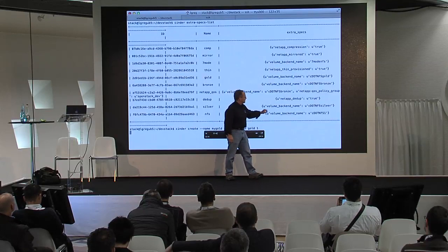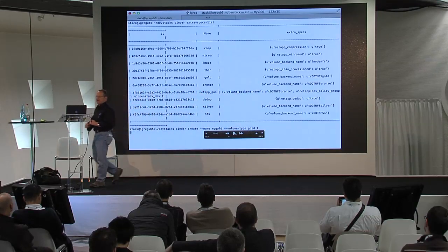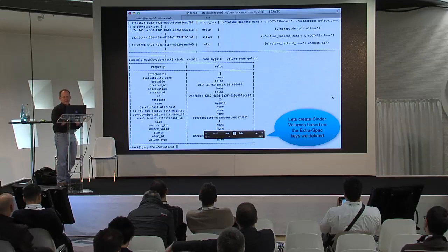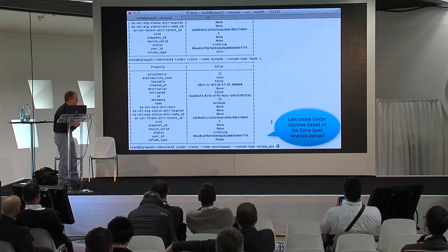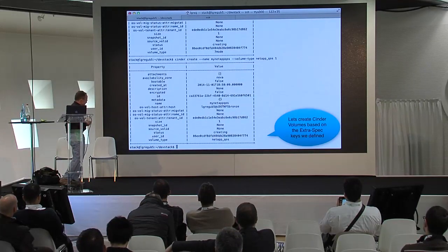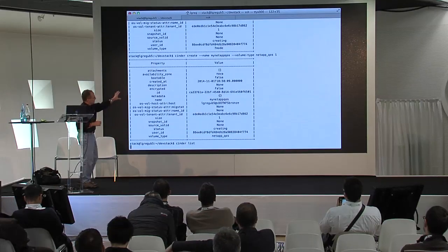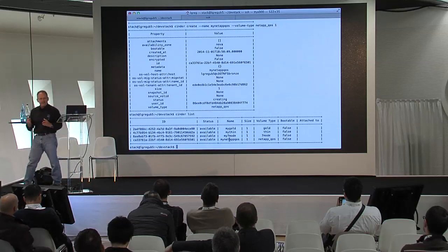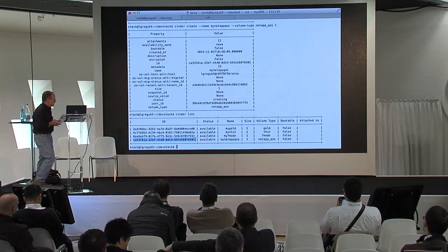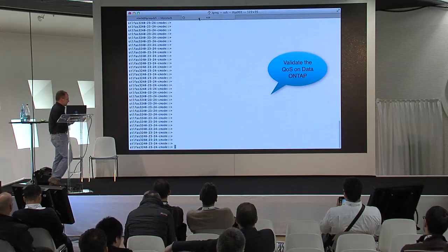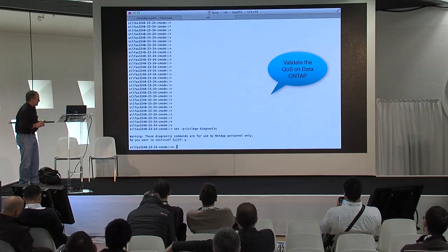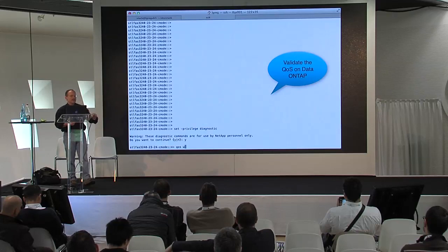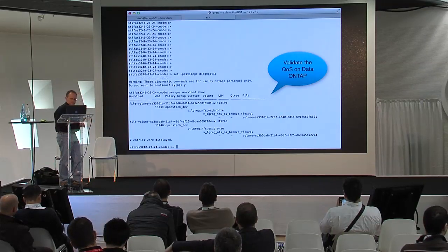So I've created all these different types of extra specs utilizing the NetApp features. One thing about the NetApp quality of service feature — I can combine both frontend cinder QoS along with NetApp QoS. In this particular example called 'OpenStack Dev', that's my QoS policy group on the storage, and I'm going to assign that to a particular backend. We'll list all the extra specs here. Volume backend name is just part of cinder, and then netapp_dedupe, netapp_thin_provisioned, netapp_mirrored, netapp_compression — those are extra specs exposed by our driver.